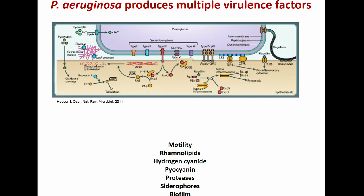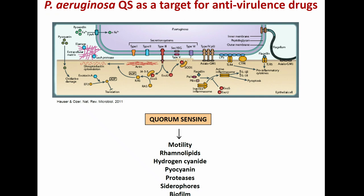In Pseudomonas aeruginosa, virulence is multifactorial. This bug produces an array of different virulence factors, most of which are secreted — so they are public goods. These include rhamnolipids, hydrogen cyanide, pyocyanin (a secondary metabolite with cytotoxic effects), proteases, siderophores, and it also produces biofilm. The production of all these virulence factors is positively controlled by quorum sensing. And we already know, thanks to previous speakers, what quorum sensing is.